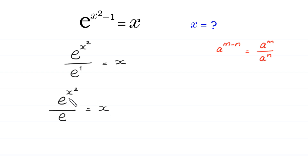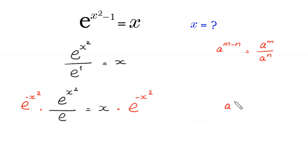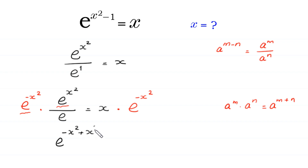Now, because here we have e to the power x squared, we multiply both sides of this equation by e to the power negative x squared. At the left side, according to the property a to the power m times a to the power n equals a to the power m plus n, we get e to the power negative x squared plus x squared over e, which equals x times e to the power negative x squared.